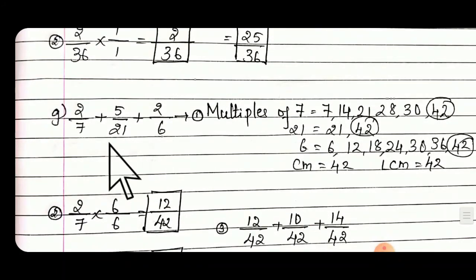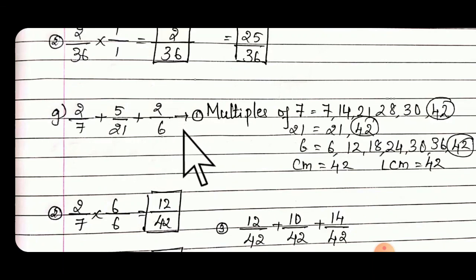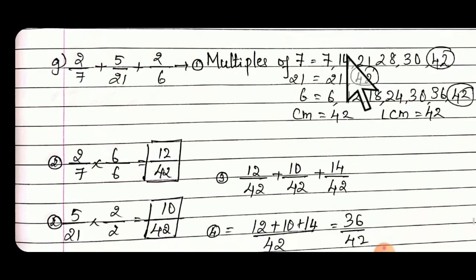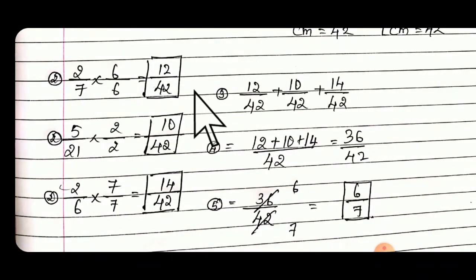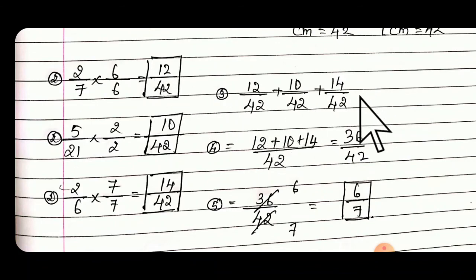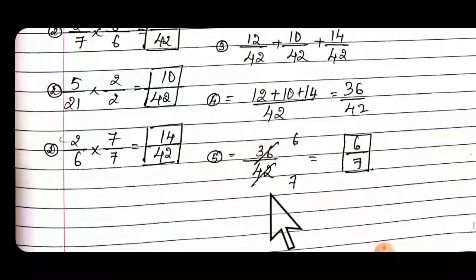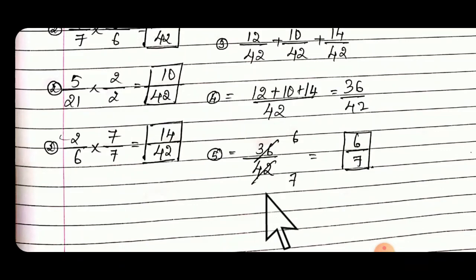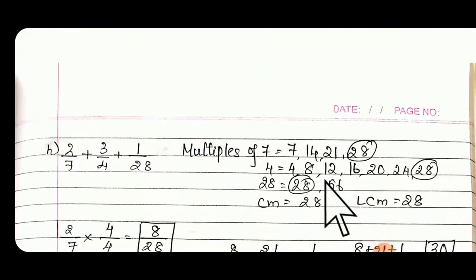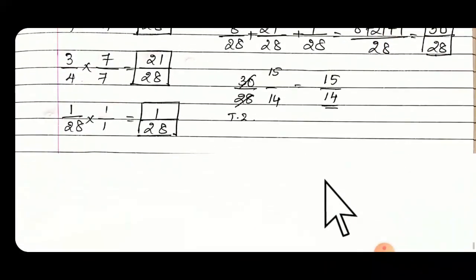Similarly F also you have to do. Then G: 2/7 + 5/21 + 2/6 — all three fractions are different. Find the LCM, then convert into like fractions. The answers are 12/42, 10/42 and 14/42. Add all these: 12 + 10 + 14 = 36, so 36/42. Reduce to lowest using table 6: 6 × 6 = 36 and 6 × 7 = 42, giving 6/7. Similarly do H.